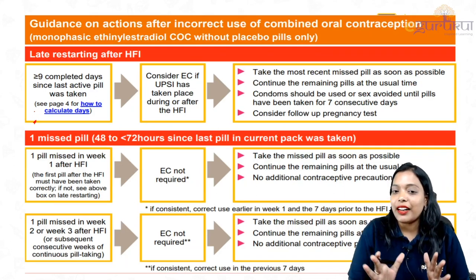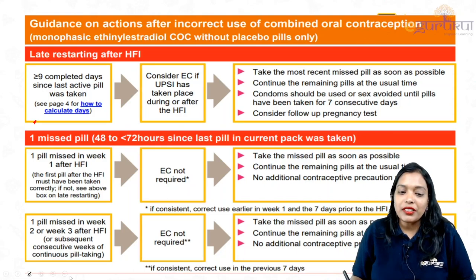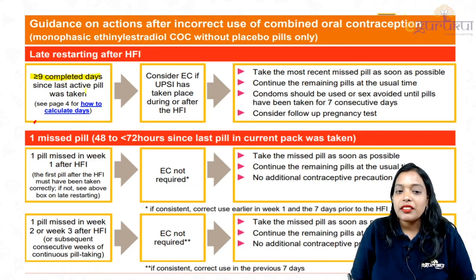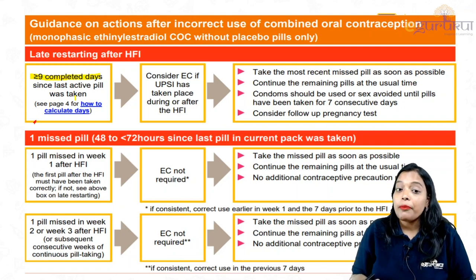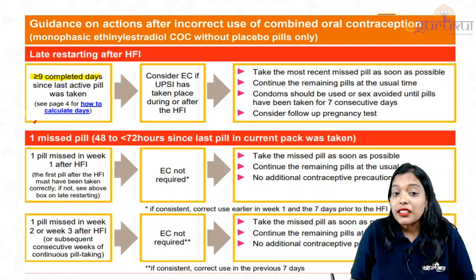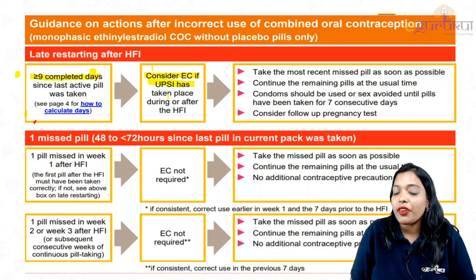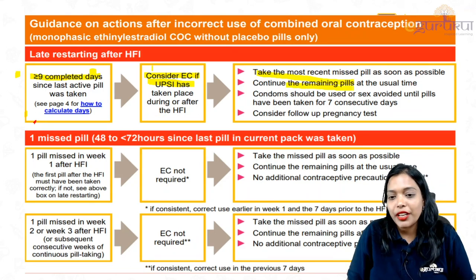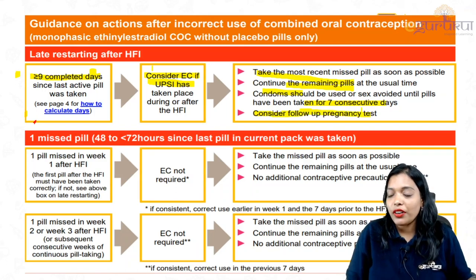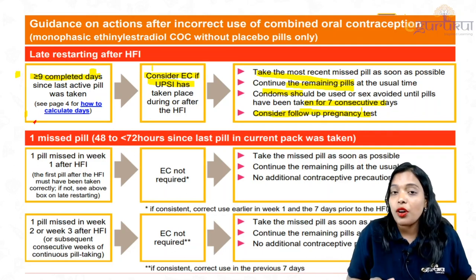Regarding late starting after the hormone-free interval: if she is starting the OCPs late after the hormonal free interval — that is, more than 9 completed days since the last active pill was taken — consider emergency contraception if she had unprotected intercourse, because dominant follicle recruitment would have already occurred. Take the most recent pill as soon as possible. Continue the remaining pills at the usual time. Condoms should be used for the next 7 days. Consider a follow-up pregnancy test because there is a chance she could be pregnant.